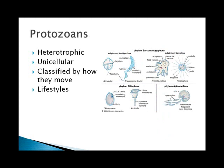Protozoans are heterotrophic because they're animal-like. They're unicellular, and they're classified by how they move. They have several different lifestyles: they can be free-living, parasitic, or mutualistic.